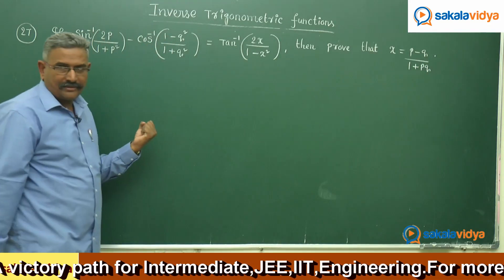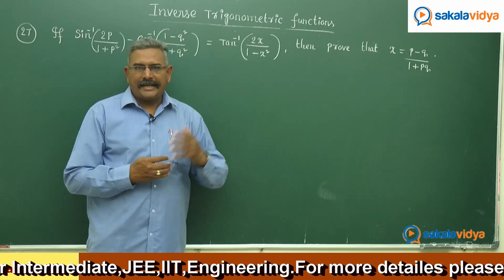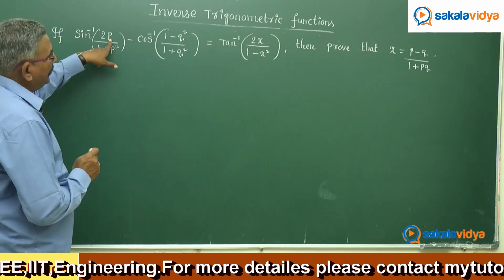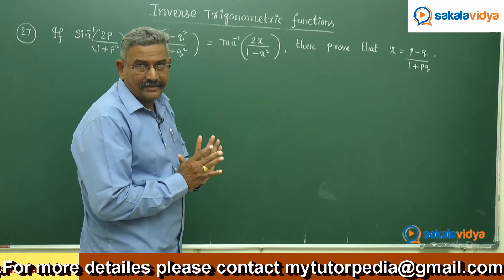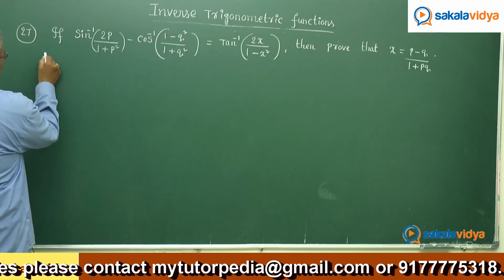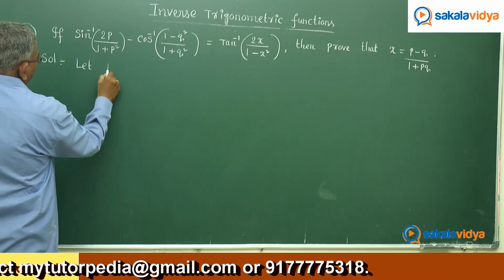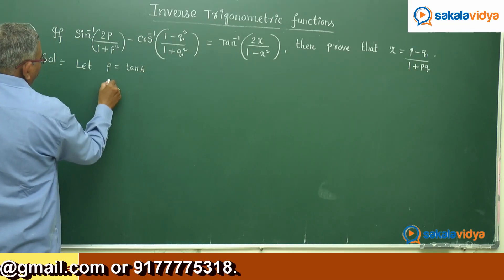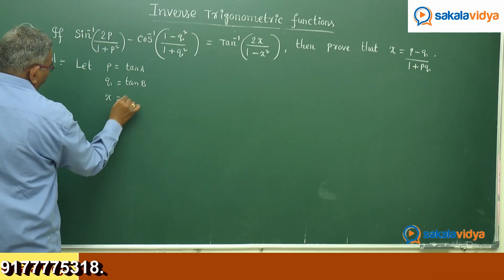So we shall make a plan before going to crack this problem. It is better to say p is equal to tan a, q is equal to tan b, and x is equal to tan c. Let us assume p = tan a, q = tan b, x = tan c.